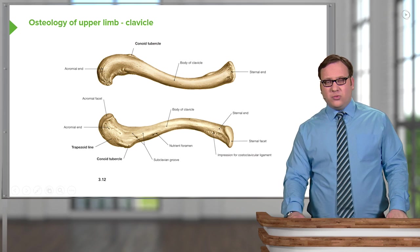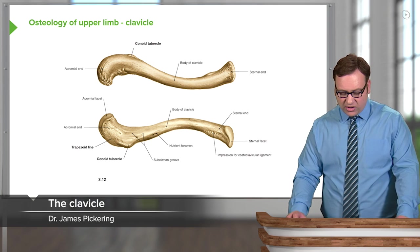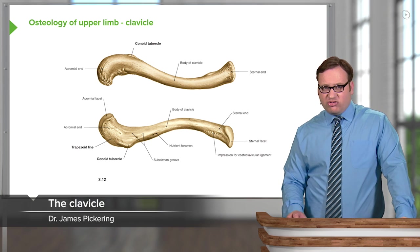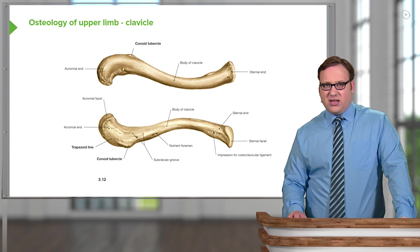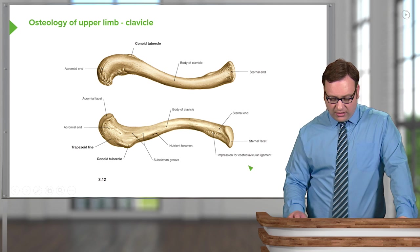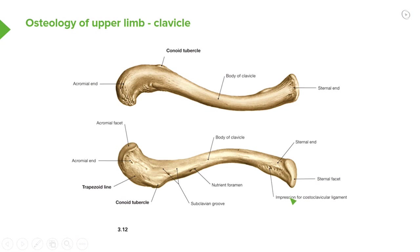Let's have a look at these bones in a little bit more detail, starting with the clavicle. On the screen we can see both a superior and an inferior view of the clavicle. We can see the sternal end, which articulates with the sternum, and we've got the acromial end over here as well, which forms articulations with the acromion of the scapula.